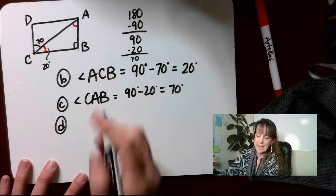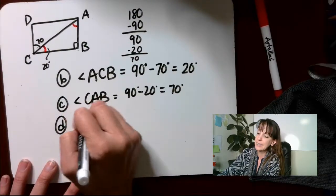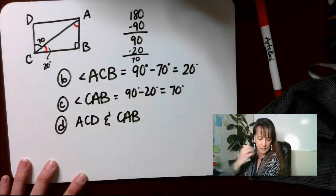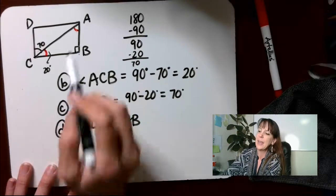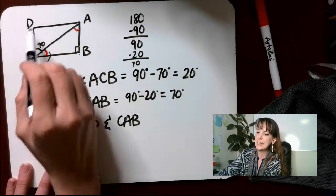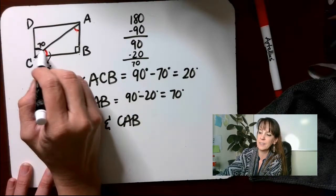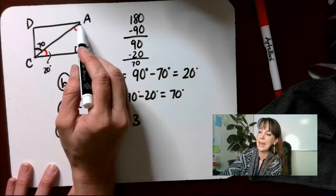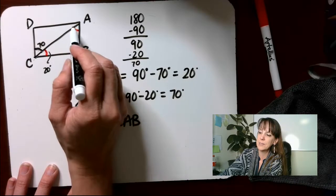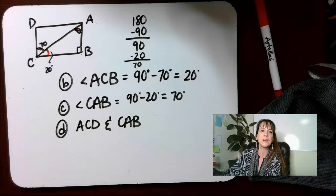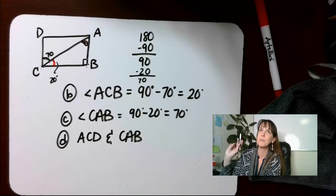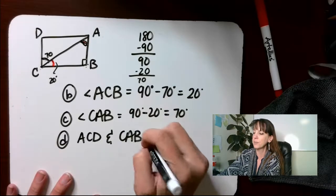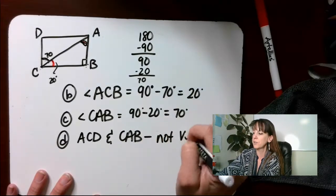For D: are angles ACD and CAB vertical angles? ACD is this one right here, and CAB is this one right here. Are those vertical angles? No — those are actually alternate interior angles, but we'll get into that much later. So, not vertical.